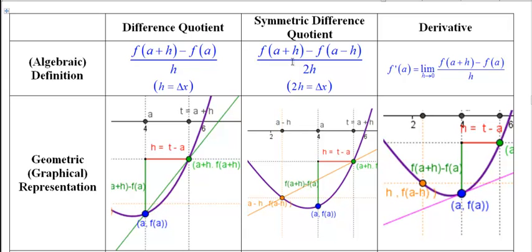Now the derivative, you just take the difference quotient formula and take the limit as h goes to zero. And that's the derivative, f prime of a. Now, it's also true that if you take the limit as h goes to zero of the symmetric difference quotient, you're going to get the same limit, provided both limits exist.